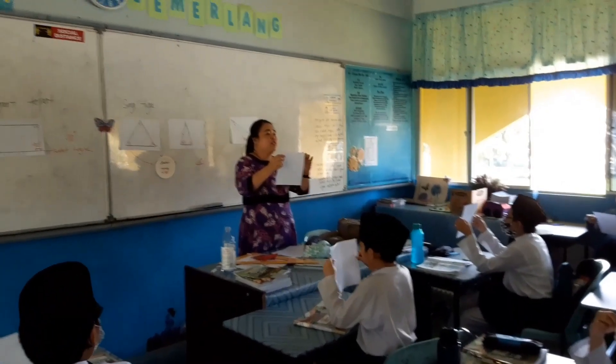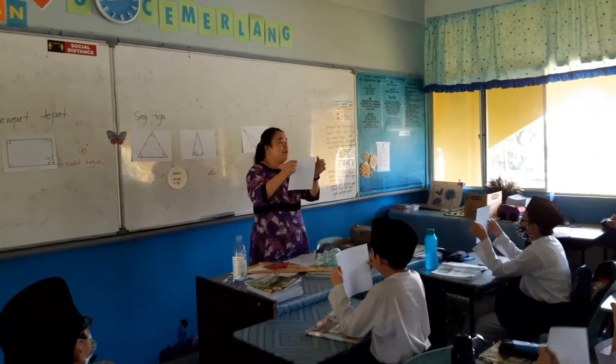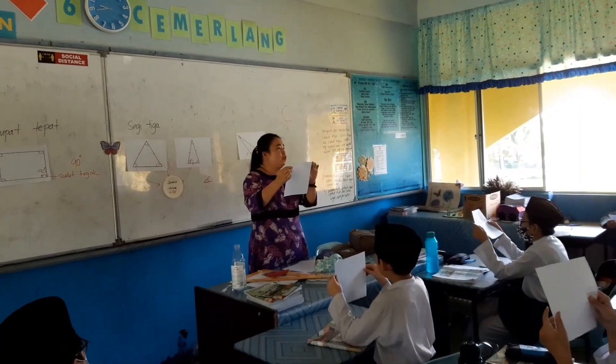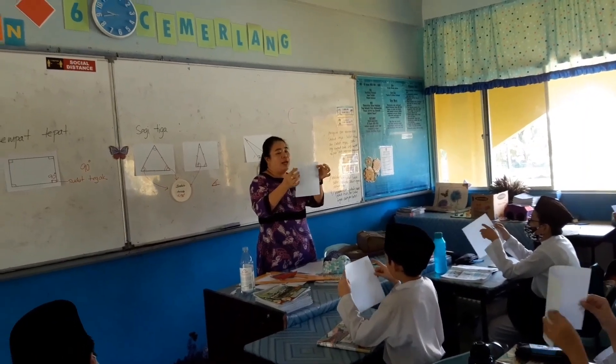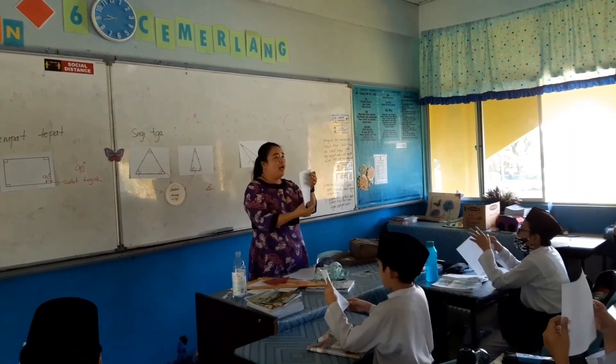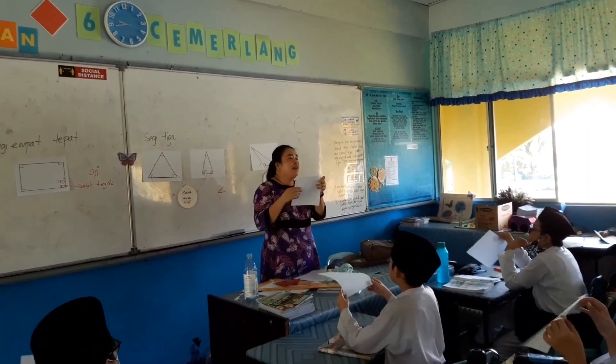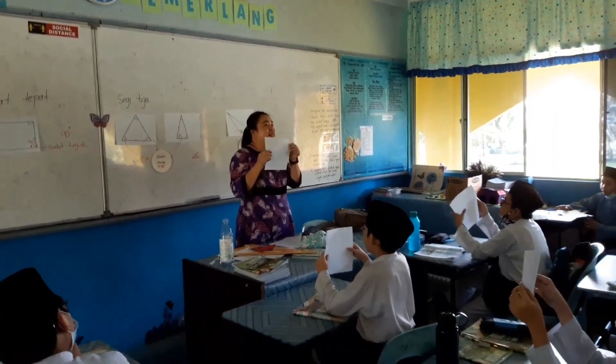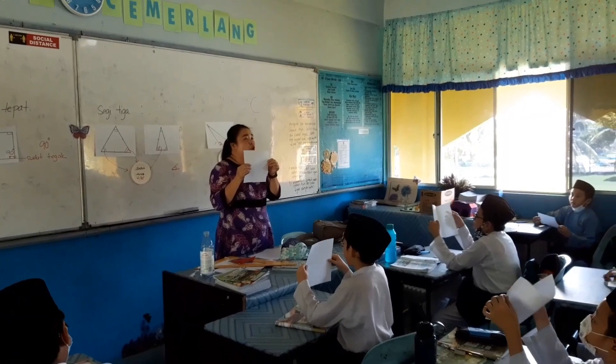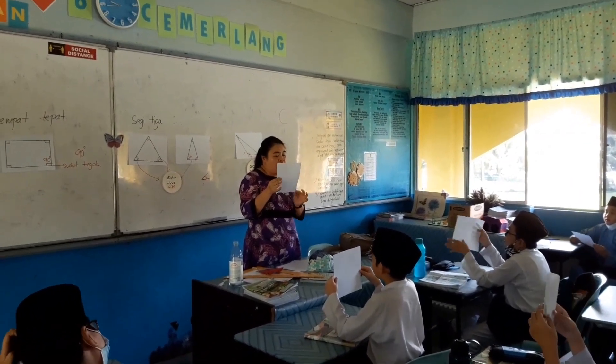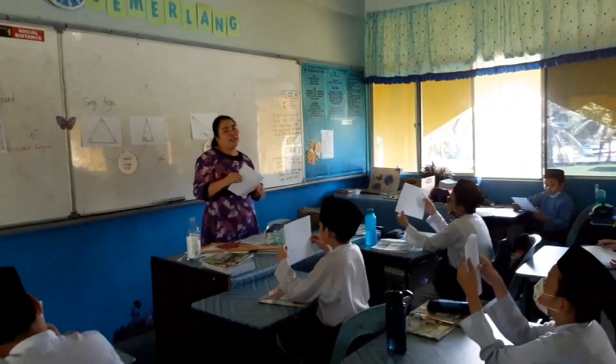Ini ada berapa sudut? Satu. Dua. Tiga. Empat. Okay. Semua ini adalah bersudut tegak.